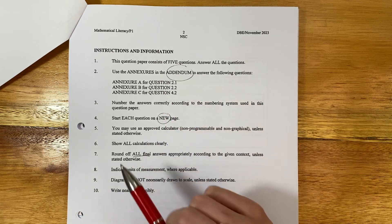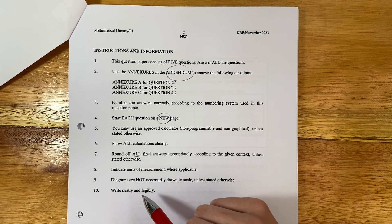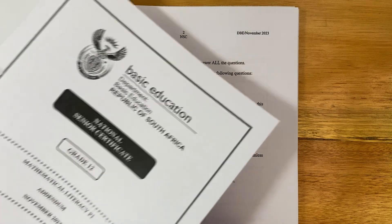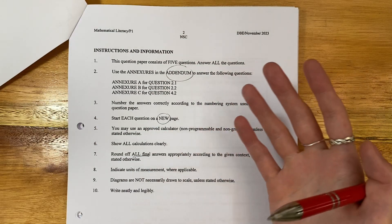For example, it will tell you whether there's an addendum. Make sure you have that addendum. I've got my addendum next to me. If you don't, ask your invigilator.